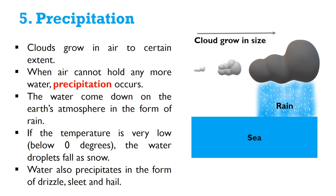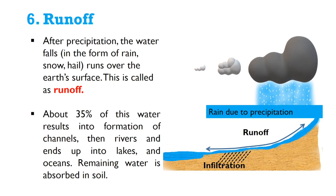The water comes down to the Earth's surface in the form of rain. If the temperature is very low — below zero degrees — the water droplets fall as snow. Water also precipitates in the form of drizzle, sleet, and hail.